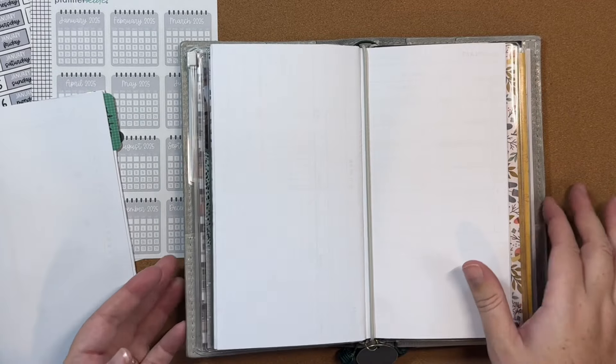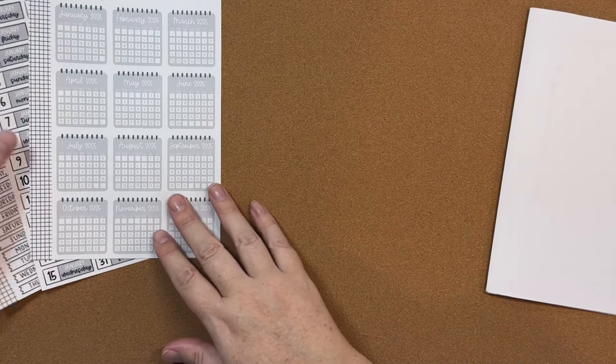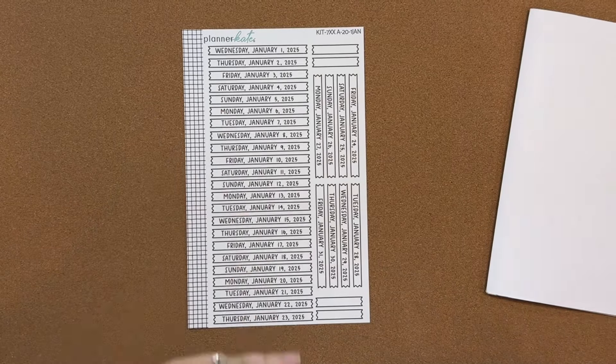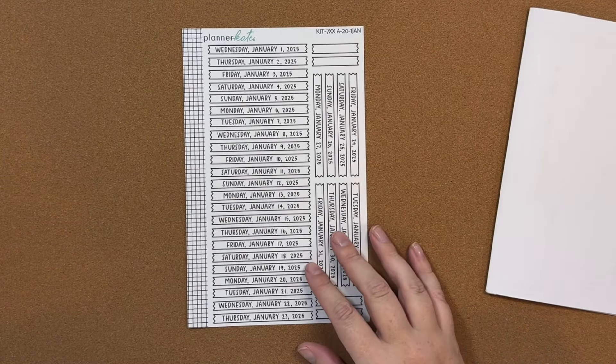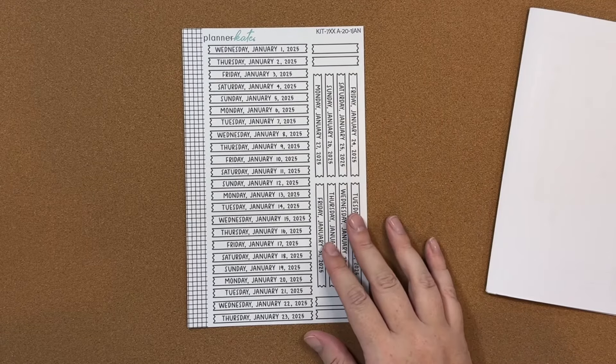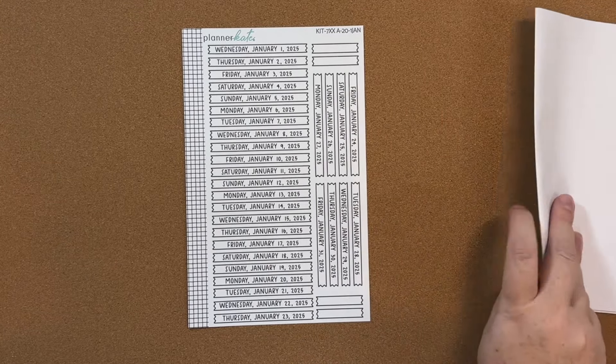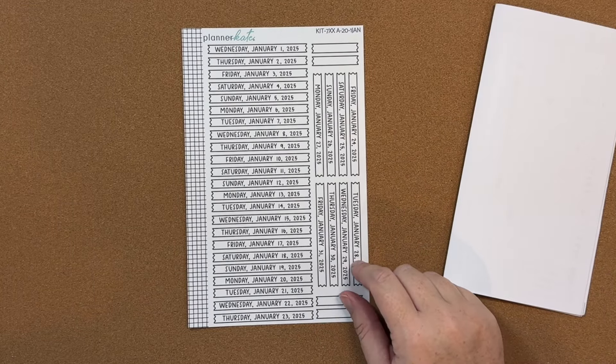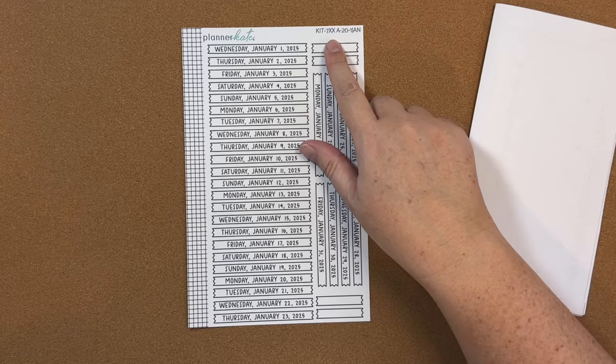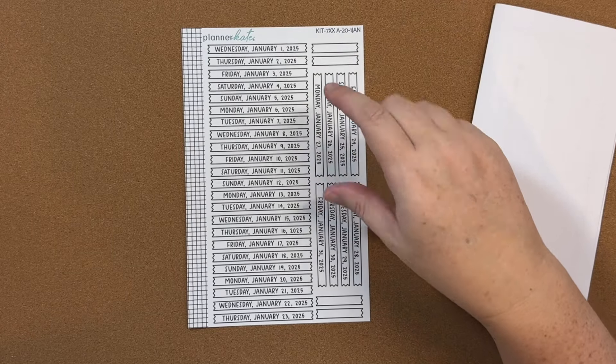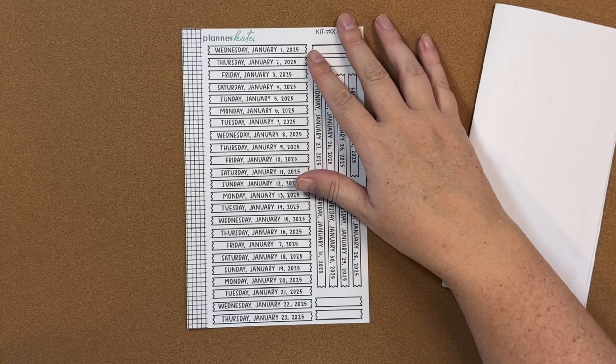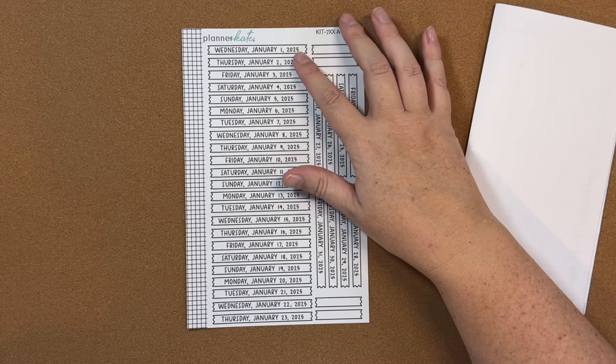But first, let's talk about these three sheets. These were sneaked on the Planner Kate Instagram and Facebook group. They are three new sheets for 2025. Since I use a lot of undated inserts, I'm particularly excited for these. This kit 7XXA20 will be available obviously for January through December, but they're the 2025 dates on these little banners. So we have the day of the week, the month, and the date.